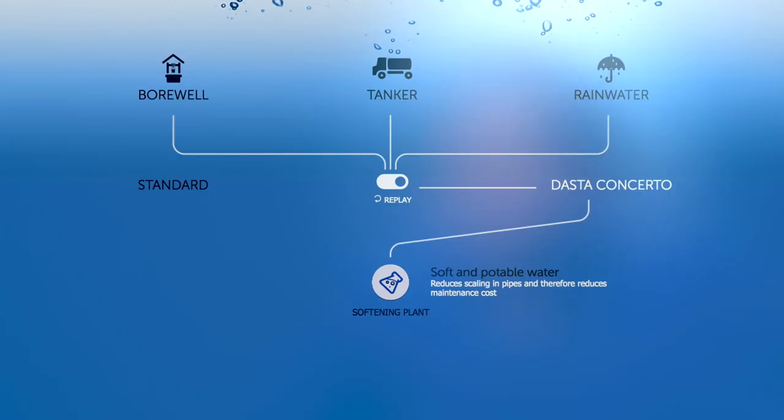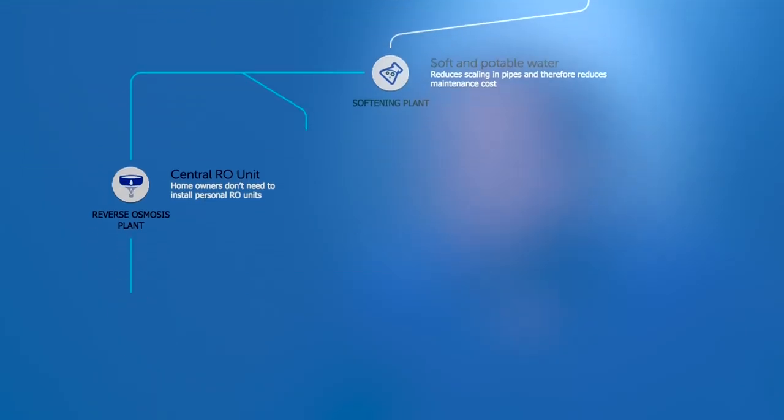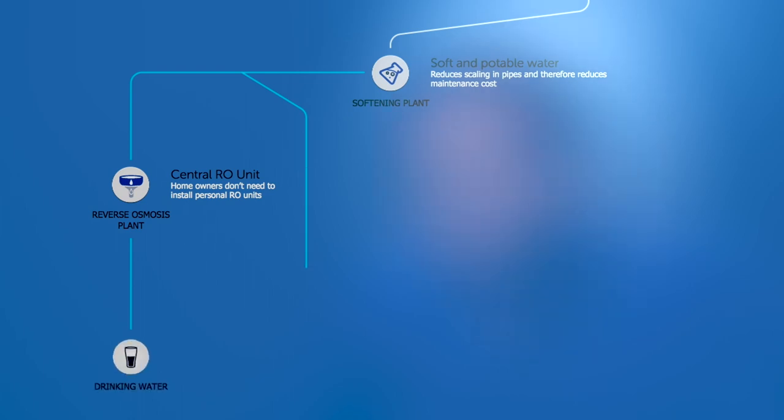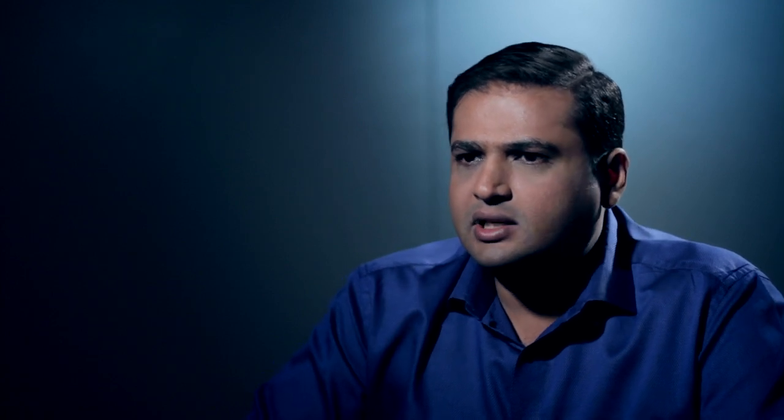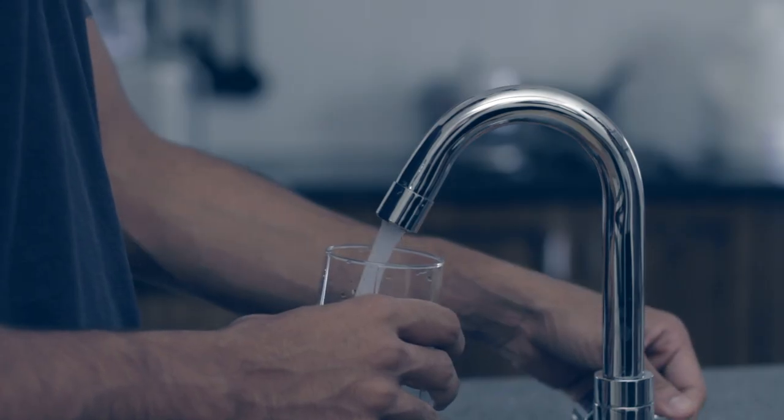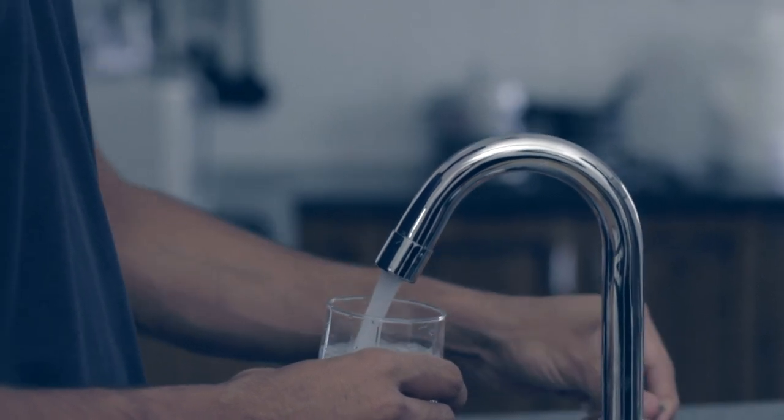After passing through the softening plant, a section of water is further passed through a centralized RO plant. From here, drinking water is piped to a dedicated faucet in every single kitchen in the building. So you can drink water straight out of this tap. You don't have to buy a water purifier or a personal RO unit.